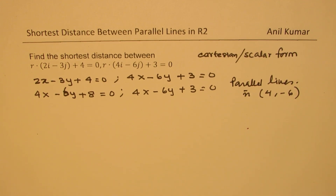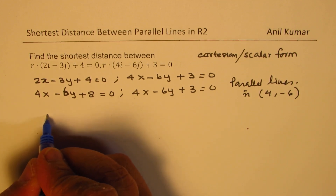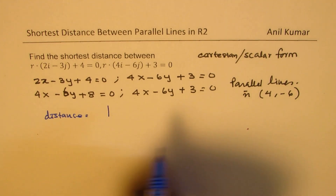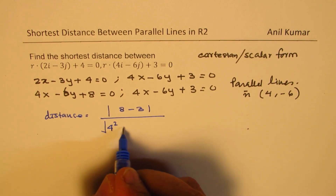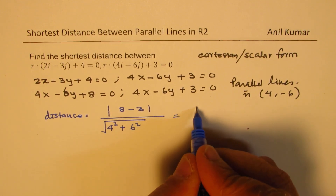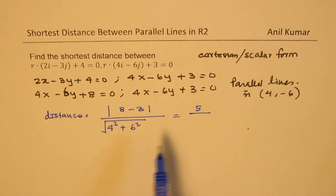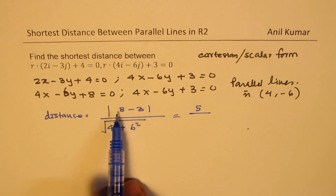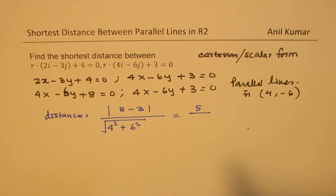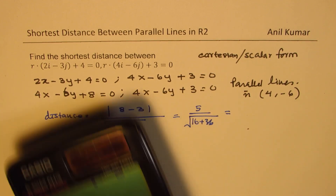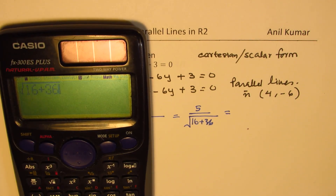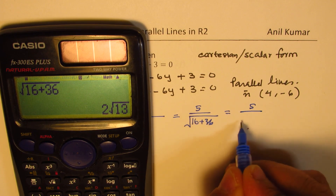The idea of multiplying by 2 is so we can take the difference between 8 and 3 directly. The distance is the absolute value of (8 minus 3) over square root of (4² plus 6²), which is 5 over square root of (16 plus 36), giving 5 over 2√13.